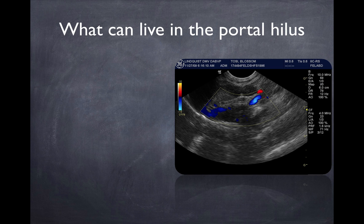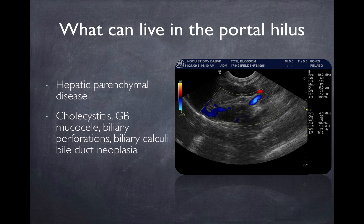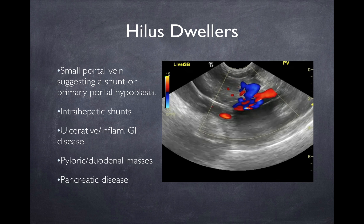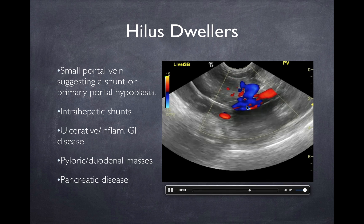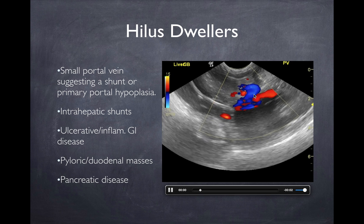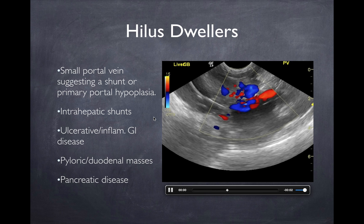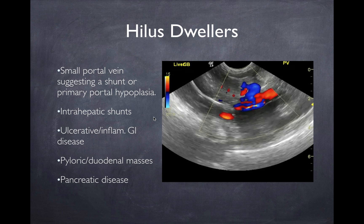It's important to evaluate the portal hilus and see what's going on in there. A lot of people don't get into the portal hilus sonographically, and if you're not doing that you're going to miss a lot of pathology. In the portal hilus you can also diagnose shunts — this is a typical extrahepatic splenocaval shunt, and you can see it as a blue vessel in the position between the portal vein and the vena cava. I hope that helps clear up some common bile duct anatomy and the necessity to get up into the portal hilus to evaluate what's going on.